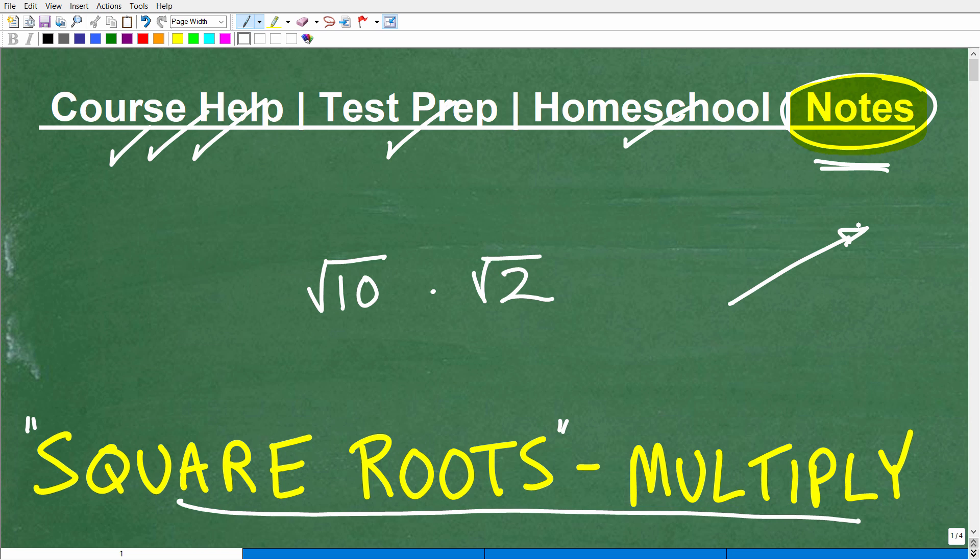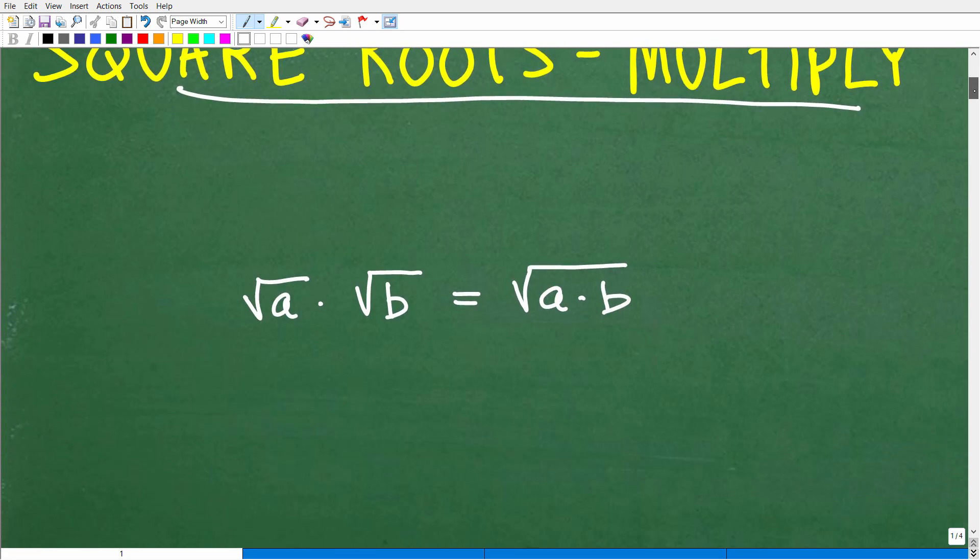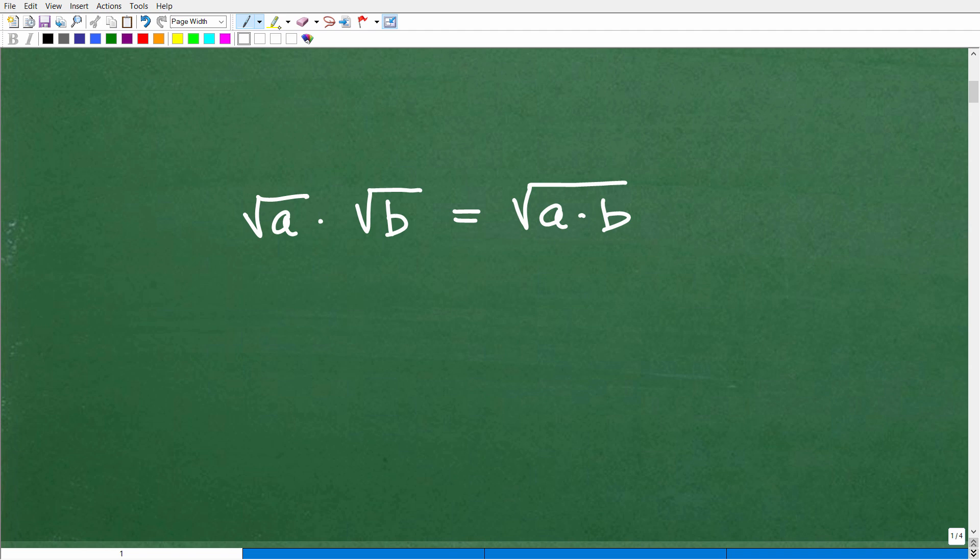So let's talk about square roots. How do we do the square root of 10 times the square root of 2? I'm going to show you this in just one second, but first, let's quickly talk about the whole property here. This is the property you need to know in algebra. The square root of A times the square root of B is equal to the square root of A times B. So this is what we want to understand.